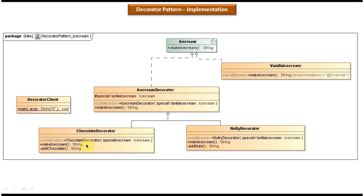When you call the MakeIceCream method of ChocolateDecorator, it will first prepare Vanilla Ice Cream, then add Chocolate on top and return Chocolate Ice Cream to the caller. Similarly, NuttyDecorator also overrides MakeIceCream — when you call it, it first prepares Vanilla Ice Cream, puts Nuts on top, and returns Vanilla Ice Cream with Nuts to the caller. On the left side you can see DecoratorClient with its main method, which is used to demonstrate this Decorator Design Pattern.